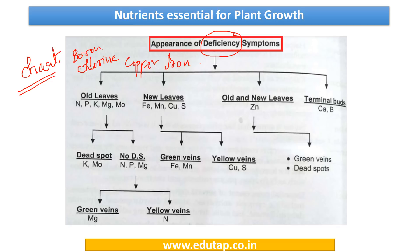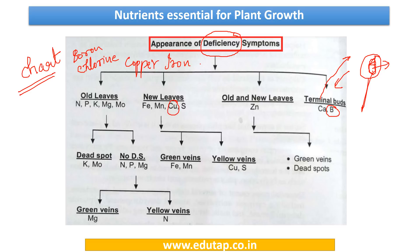If you can see here, boron comes under the category where terminal buds get affected. The terminal or apical bud is the tip of the plant where new leaves are being formed. In case of boron deficiency, the symptom would first appear in this terminal bud. For copper, symptoms would be seen in the new leaves, with an occurrence of yellow veins. For iron, the symptoms are also seen in the new leaves.